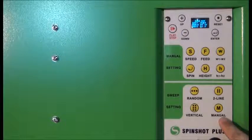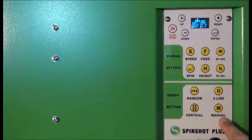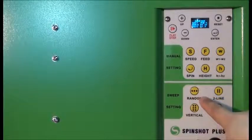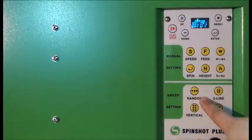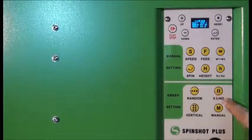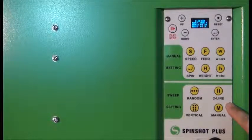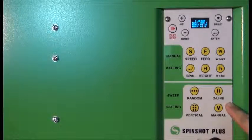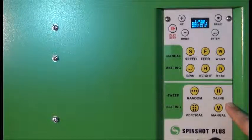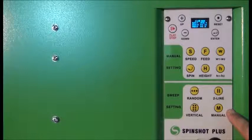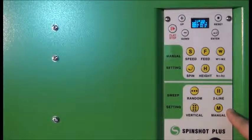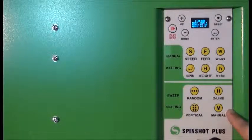If you want to set the machine to random, you press the random button here, two-line here. Now you can also set it to two-line vertical. To do this, you have to press the two-line button first and then the vertical button here.